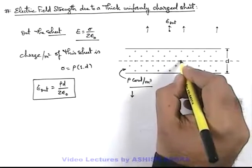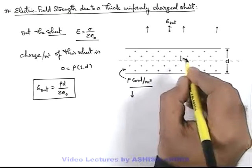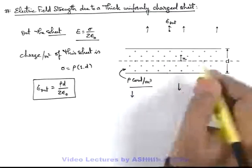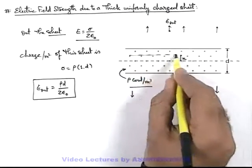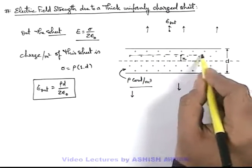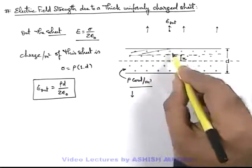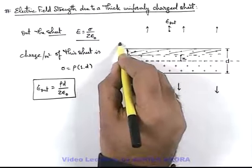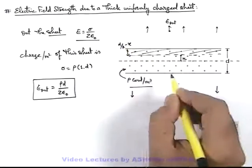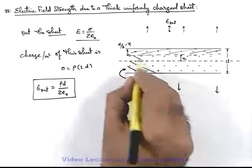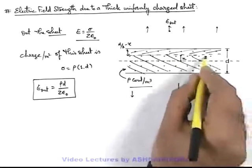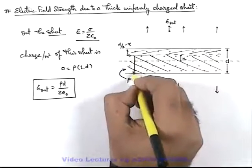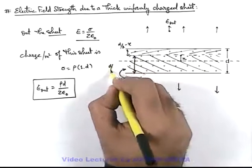Now if inside we calculate at a distance x from the central plane, then in this situation we can divide the whole sheet in two parts - one is the upper part which is of thickness d by 2 minus x, another is this lower thick part of the sheet which is having a thickness of d by 2 plus x.